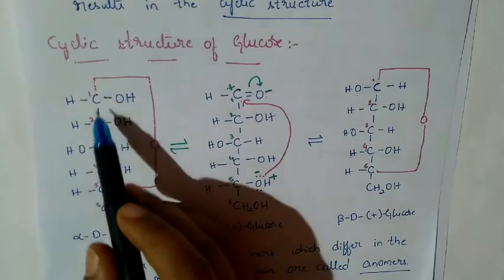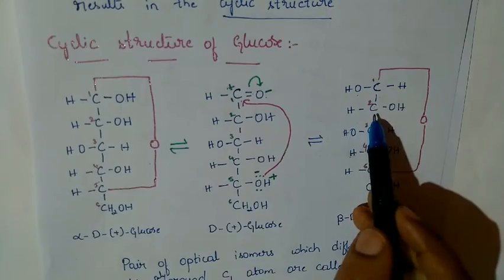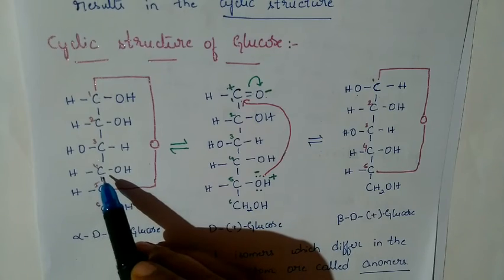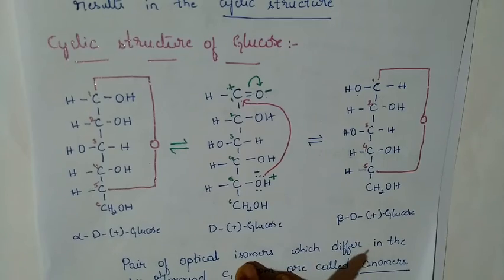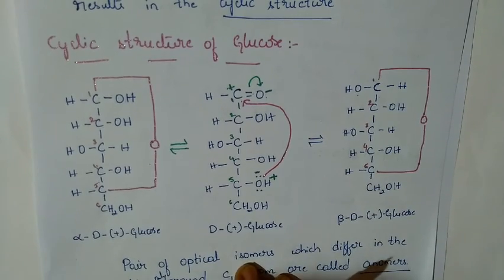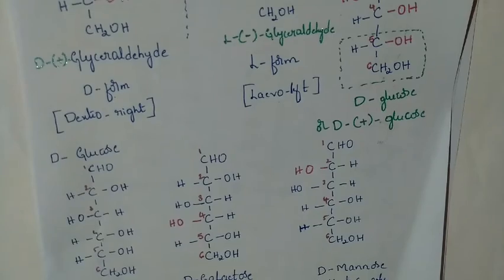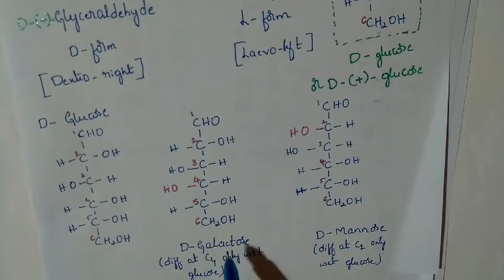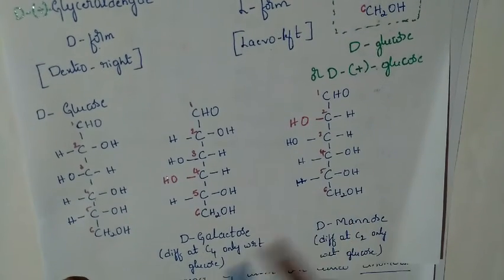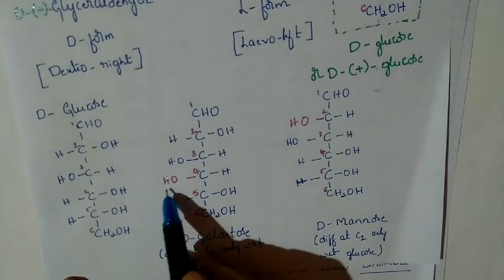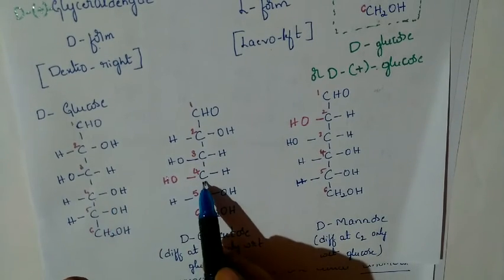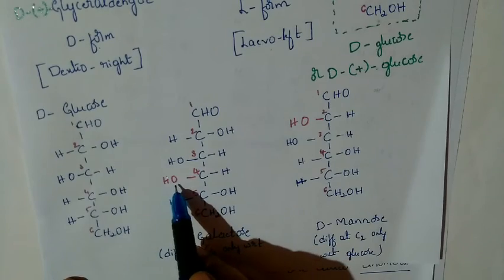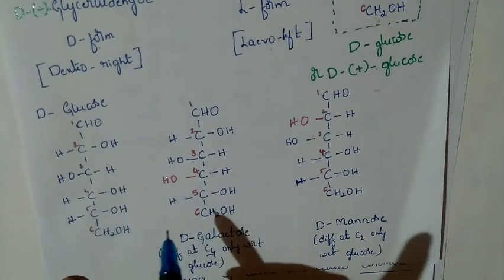Anomers are epimers that differ at only the first carbon atom, hence called anomers. If the difference is at carbon 2, 3, or 4 — any position — but only one carbon, those are epimers but not necessarily anomers. For example, glucose and galactose differ at the 4th carbon — OH is on the right in glucose and left in galactose — so these two are called epimers, not anomers.